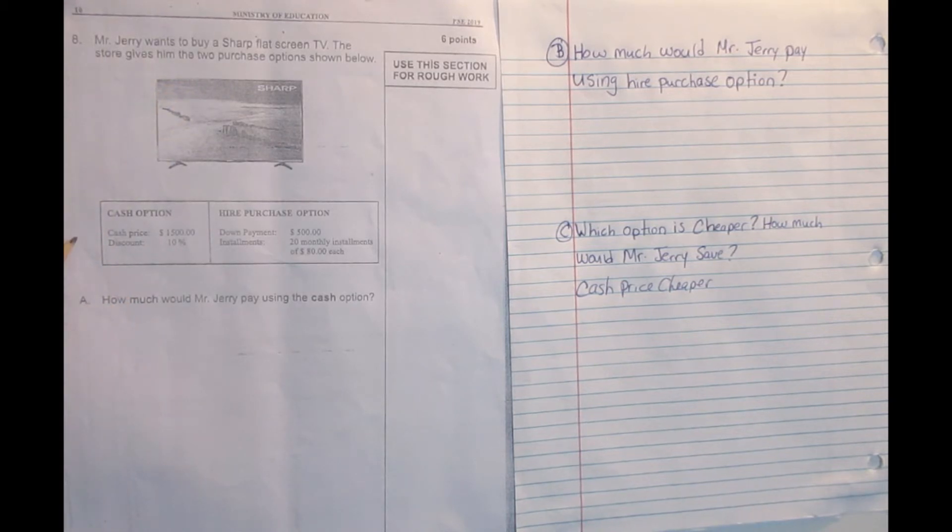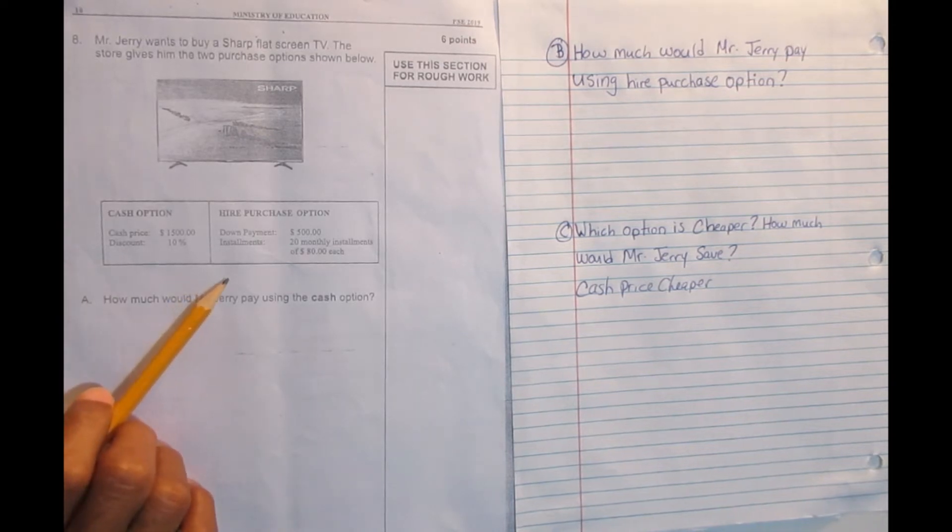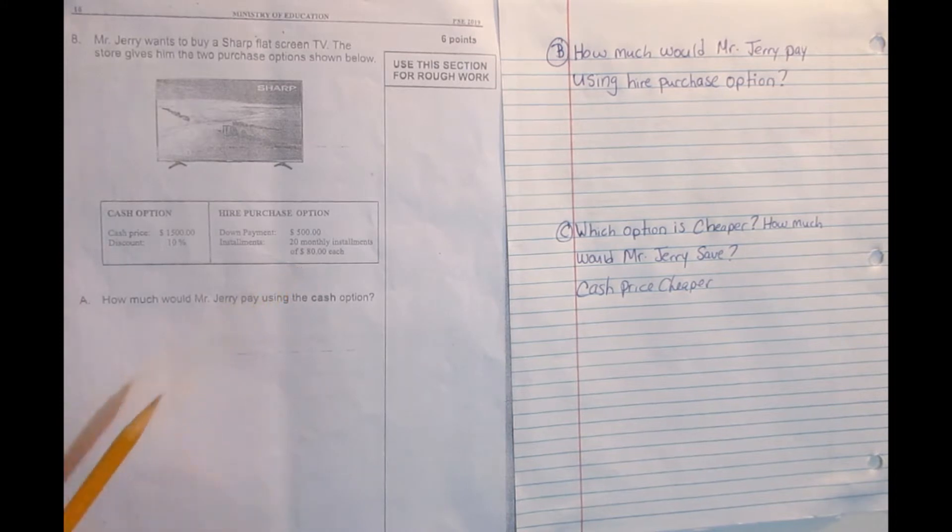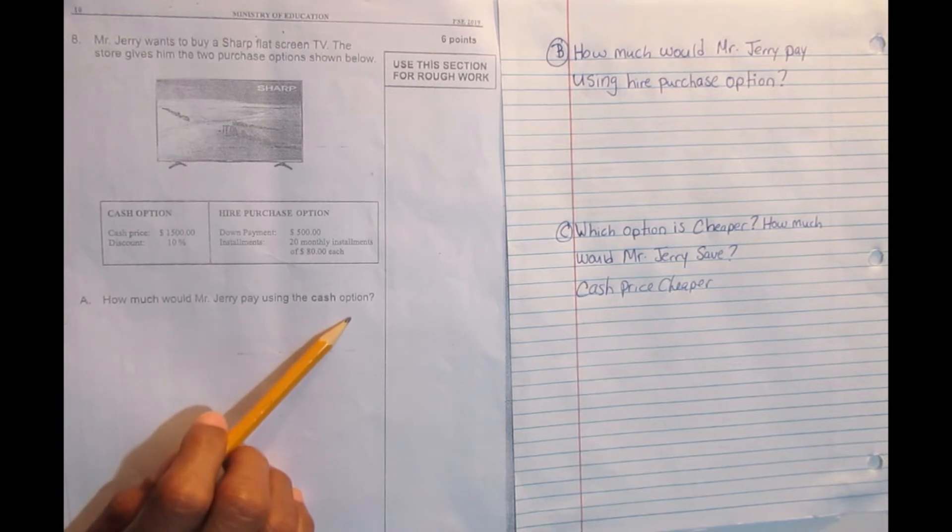Cash option: he buy the TV cash for $1,500 and get 10% discount, or he get the TV on hire purchase option, pay down $500 and 20 monthly installments of $80. And A says, how much would Mr. Jerry pay using a cash option?